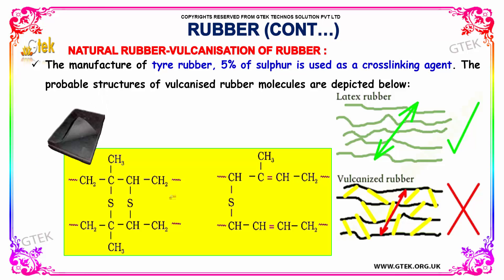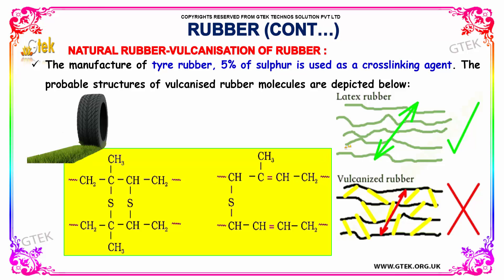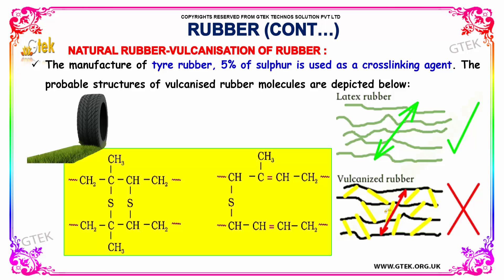The probable structures of vulcanized rubber molecules are depicted below. In the manufacturing of tire rubbers, 5% sulfur addition is used as a cross-linking agent.